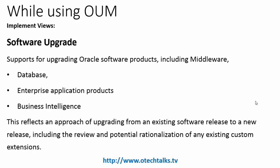For upgrades — for example from Release 11i to Release 12, or from 12.1.3 to 12.2.4 — OUM provides a software upgrade methodology view. This covers all middleware, database, enterprise application products, and business intelligence. It is used for upgrading any existing version to the latest version and provides custom extensions documentation for use within the software upgrade project.